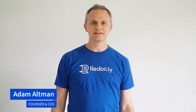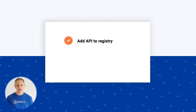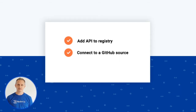This is an introduction to Redoc.ly. In this video, we'll create API reference documentation. We'll add an API to our registry and create at least one version of it by connecting it to our GitHub source. Then, we'll generate the reference docs.